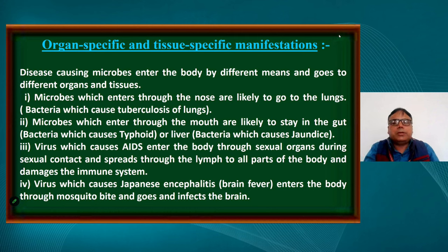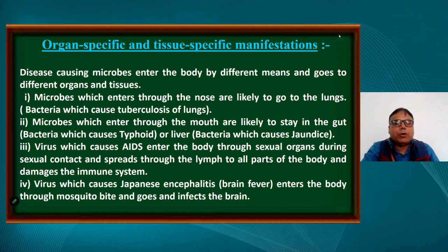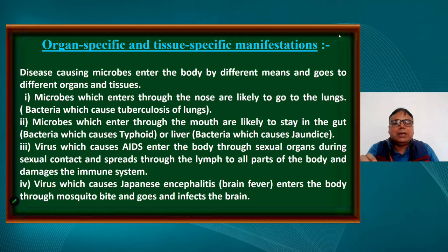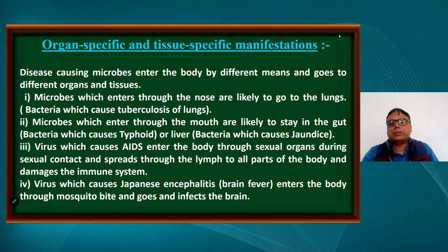There are organ-specific and tissue-specific manifestations seen in disease. Disease-causing microbes enter the body by different means and go to different organs and tissues — microbes entering through the nose go to the lungs, like the bacteria that causes tuberculosis. Microbes entering through the mouth stay in the gut, like bacteria causing typhoid or bacteria causing jaundice in the liver.